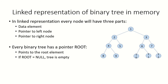If we have to represent a binary tree using a linked list, then each element would be represented as a node, and each node is going to have three parts. One would be the part corresponding to the data element — it could be an integer, a character, or any data type. Then it would have a pointer to the left node and a pointer to the right node.